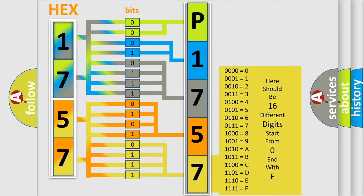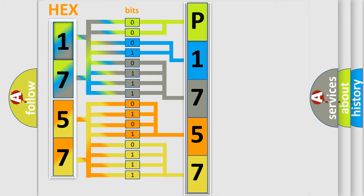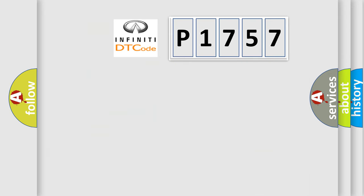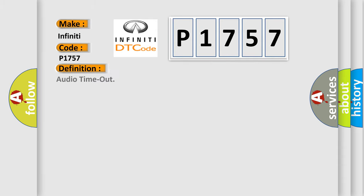We now know in what way the diagnostic tool translates the received information into a more comprehensible format. The number itself does not make sense to us if we cannot assign information about what it actually expresses. So, what does the diagnostic trouble code P1757 interpret specifically for Infiniti car manufacturers?